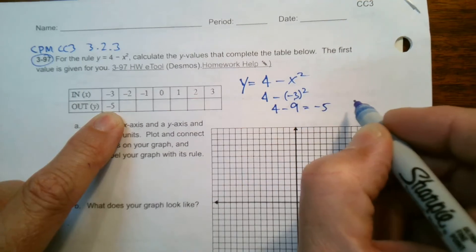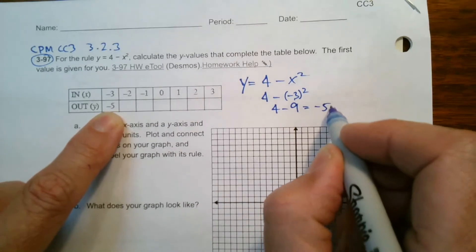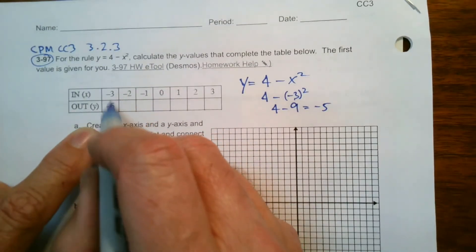So then four minus five, excuse me, four minus nine. Sure enough. Yes, it does equal negative five. Four minus nine is negative five. So that's how they're doing that. That's how they got that value.